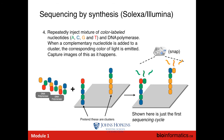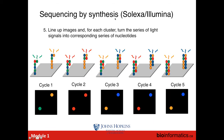You then repeat this cycle to sequence the second base, then the third, fourth, and fifth base. In cycle one we detected a green flash from this molecule and a yellow flash from that one. In cycle two we detected red in both, then cycle three, cycle four, cycle five. This repeats for however long your template is — usually around a hundred cycles to get a hundred base read.